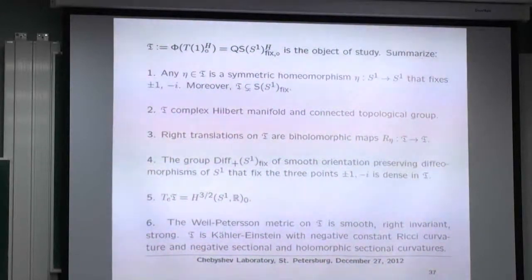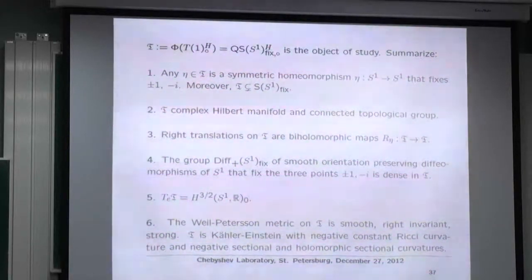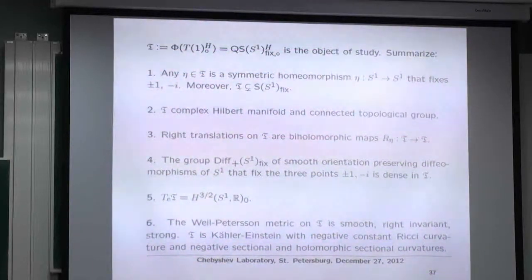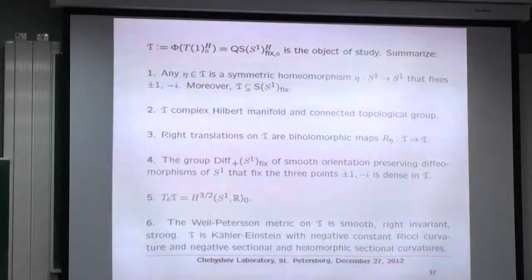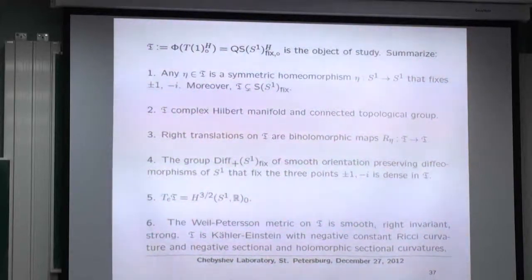To summarize the picture: we have QS_fix with the Hilbert manifold structure — a complex Hilbert manifold and a connected topological group; right translations are biholomorphic. The group of diffeomorphisms fixing three points is dense, the tangent space is H^{3/2}, and the Weil-Petersson metric has all the good properties. The Bers embeddings, the real and complex manifold structures, and the codimension-three submanifolds are all in place.